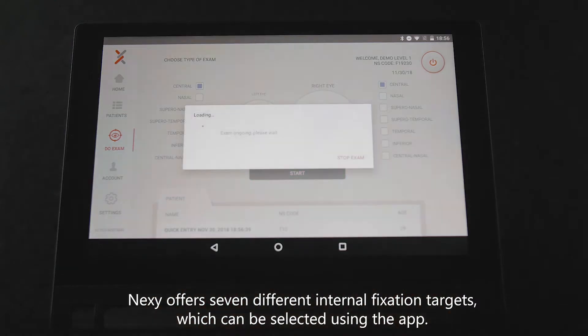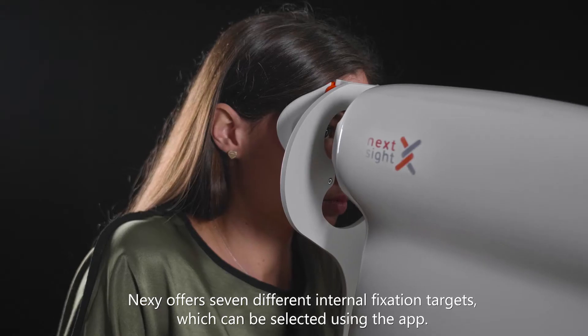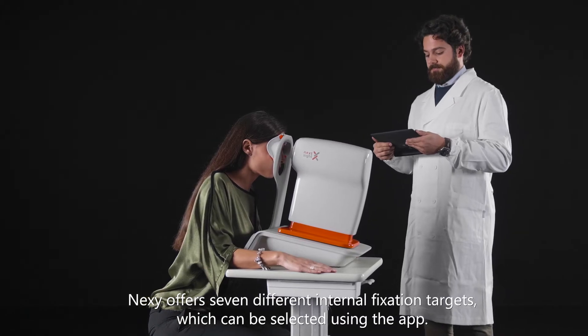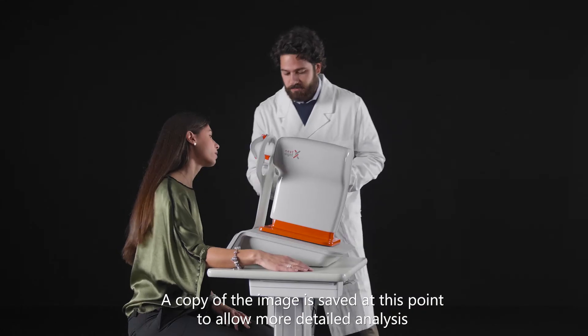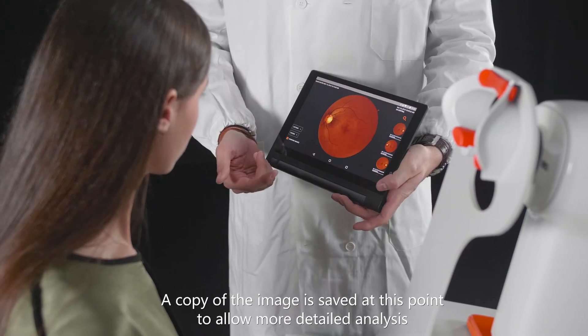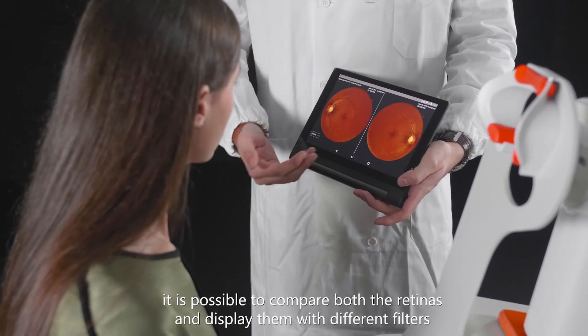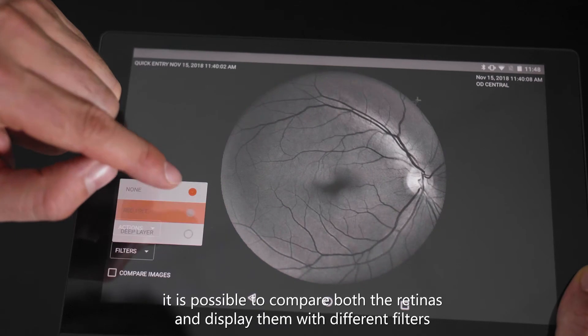Nexi offers seven different internal fixation targets, which can be selected using the app. The image appears on the tablet after about 15 seconds. A copy of the image is saved at this point to allow more detailed analysis. It is possible to compare both the retinas and display them with different filters.